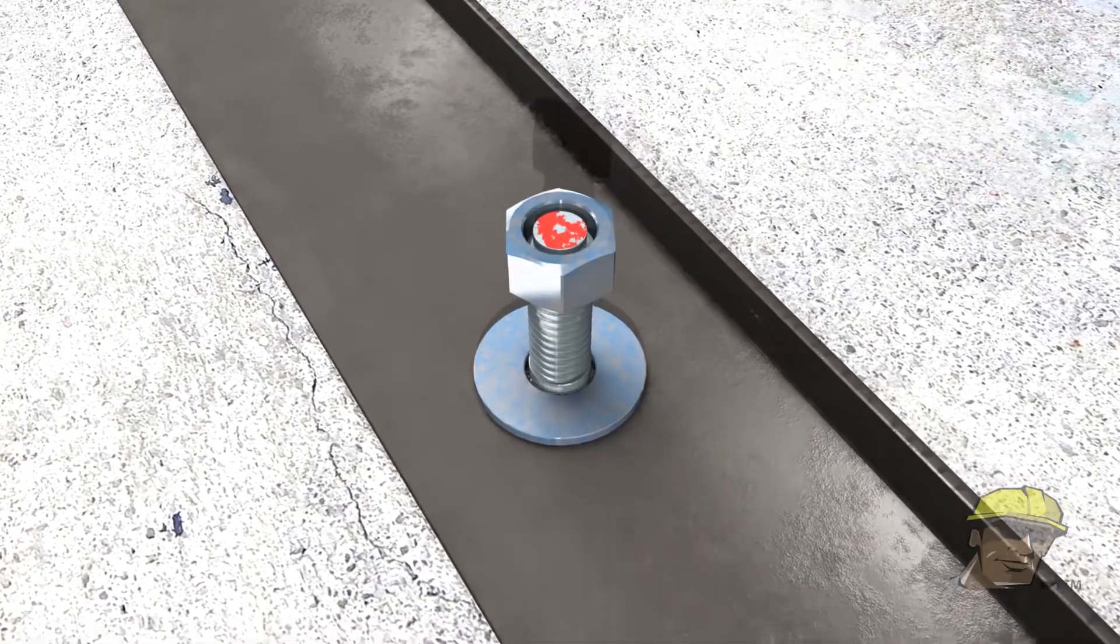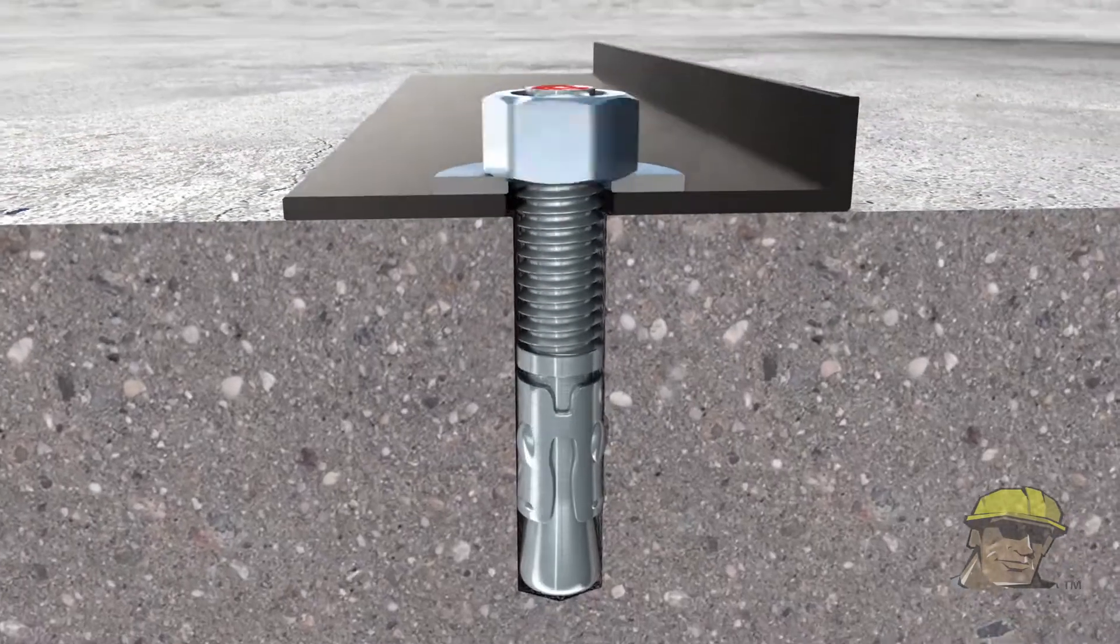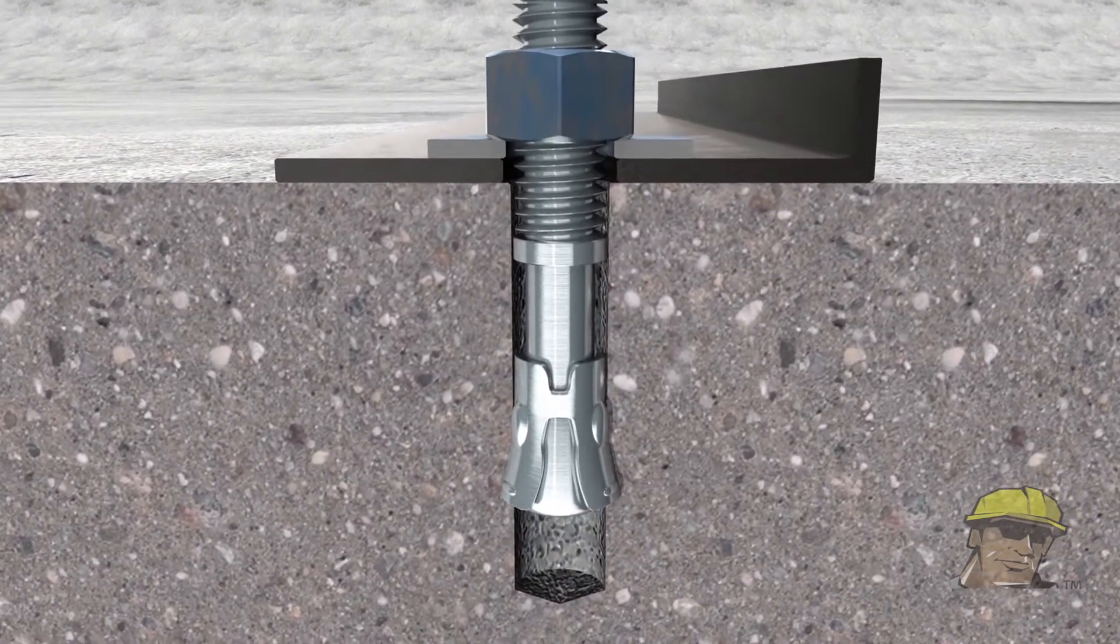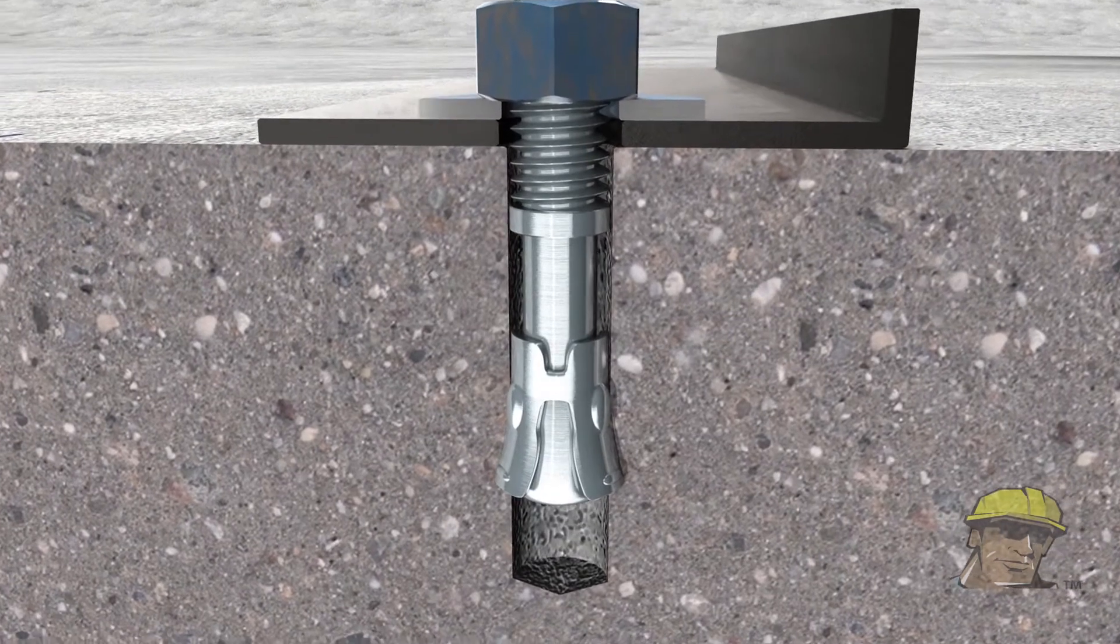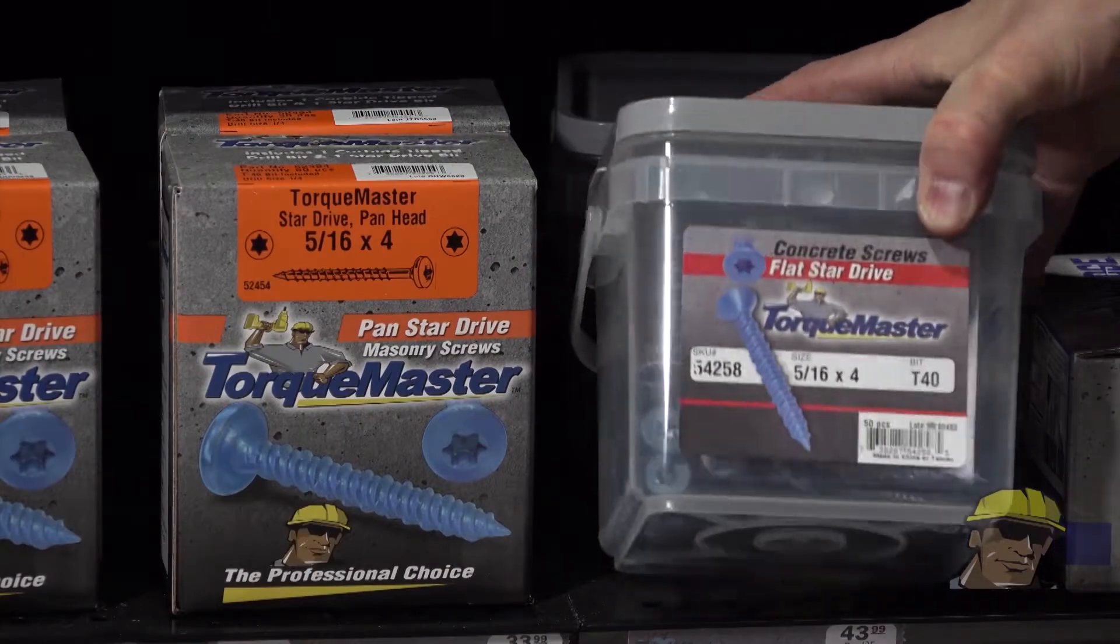Using a hammer, seat the anchor into the hole. Now tighten the nut. This raises a tapered shaft causing the anchor sleeve to grip the surrounding concrete and providing maximum holding power. TorqueMaster is the professional's choice.